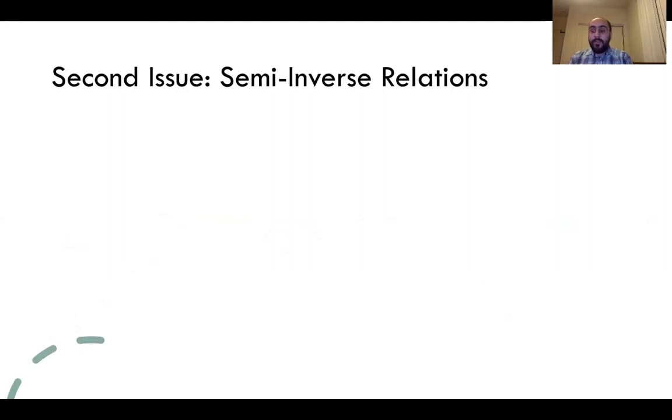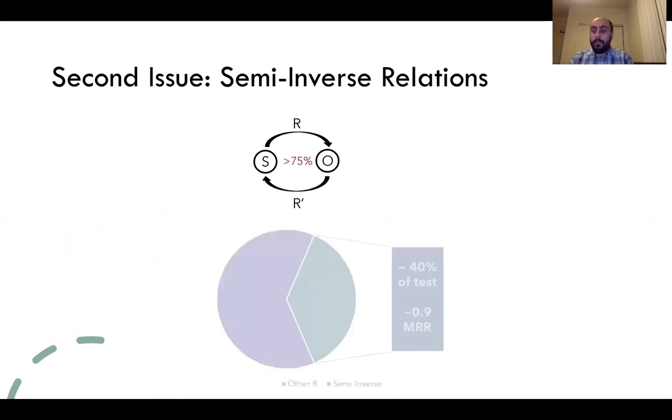Furthermore, there exist semi-inverse relations in current benchmarks. We define these relations as pairs of relations that appear within the same subject and object with a very high ratio in training data. The problem with these relations is that there is a large number of them, and they are simple to predict, which makes ranking metrics unreliable.